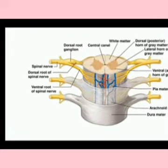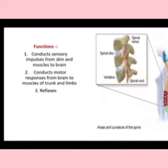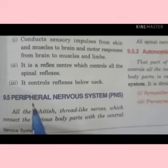Now, the functions of the spinal cord: the spinal cord conducts sensory impulses from the skin and muscles to the brain, and it conducts motor responses from the brain to the muscles of the trunk and limbs — meaning your hands and legs. It also controls reflexes below the neck.